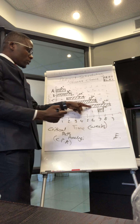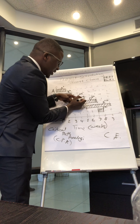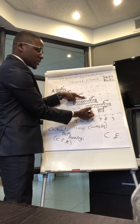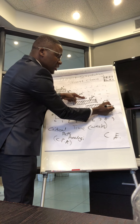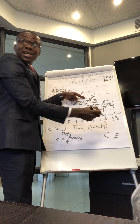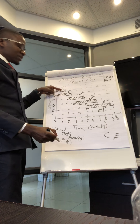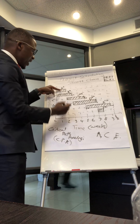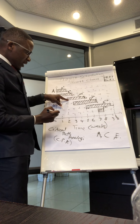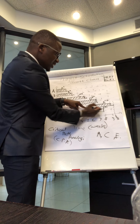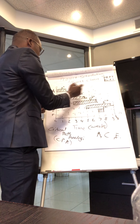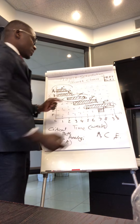Look at what happens if you delay C: if it's supposed to finish here and you delay it and finish it later, then E will start later and finish beyond week nine — meaning the project is late. What does C depend on? A. So A is also critical. If you move A by one day it will move C, which moves E, meaning the whole project is late. So A, C, and E are the critical activities.